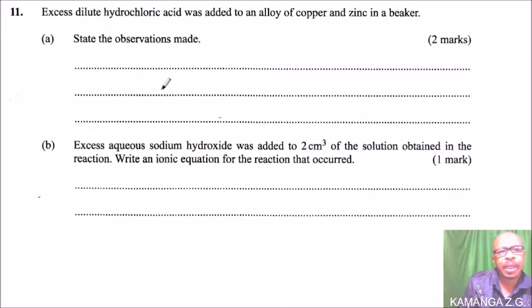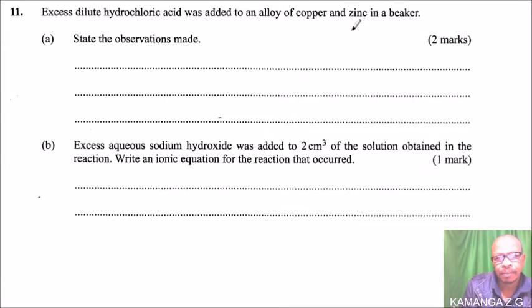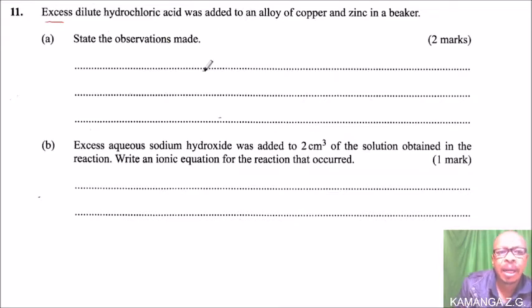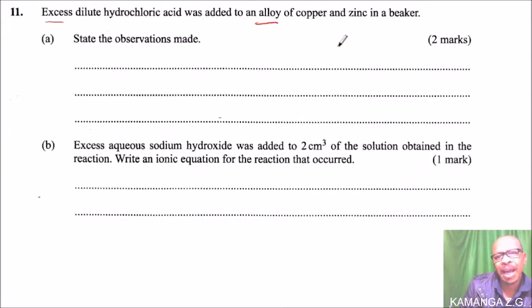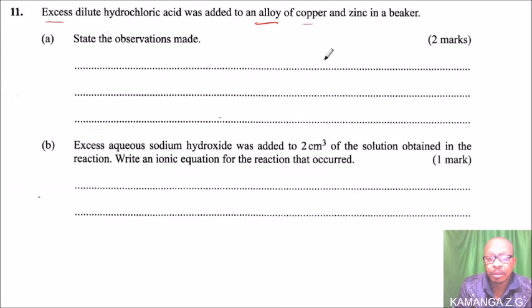This is question number 11, where we are told excess dilute hydrochloric acid was added to an alloy of copper and zinc in a beaker. The word 'excess' is very crucial here. An alloy is a mixture of two metals, and among copper and zinc, copper is less reactive.